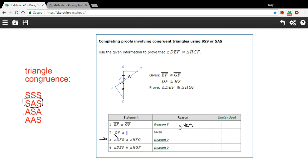And then number two says DF is congruent to blank because of given. Well, that's right up here. DF is congruent to HF. So that's easy enough to fill in as well.